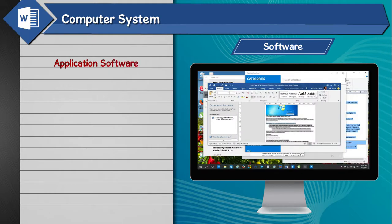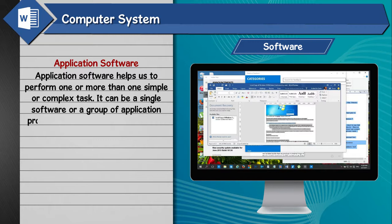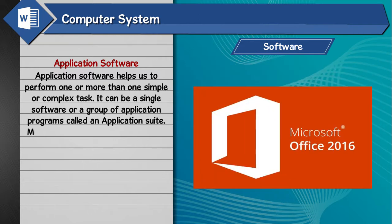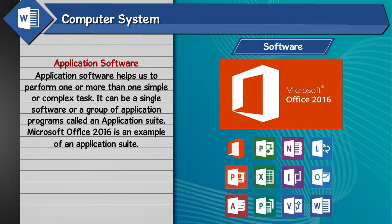Application Software. Application software helps us to perform one or more than one simple or complex task. It can be a single software or a group of application programs called an application suite. Microsoft Office 2016 is an example of an application suite.